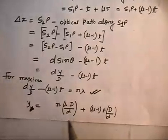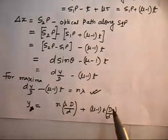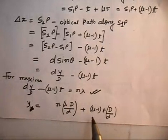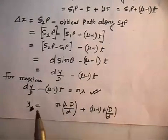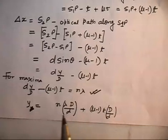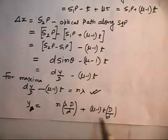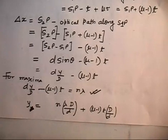So the condition for maxima with glass gives: y = nλD/d + (μ−1)t·D/d. Since μ is greater than 1, the term (μ−1)t is a positive quantity. This means y will have the original term plus an additional positive term. Write this out and then we will go to the next phase.